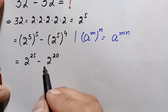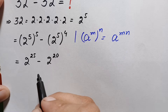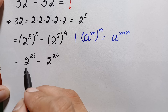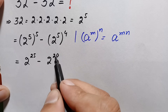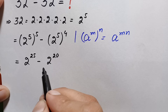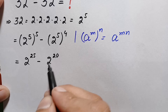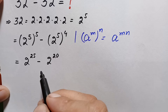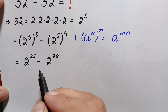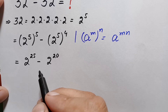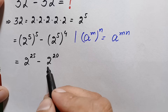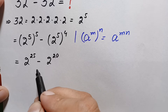Now we can solve this further using two different methods. The first is to find the individual values of 2 raised to power 25 and 2 raised to power 20 and then subtract. The second method is to take out the factor 2 raised to power 20 common from both terms and simplify. We will use the second method.